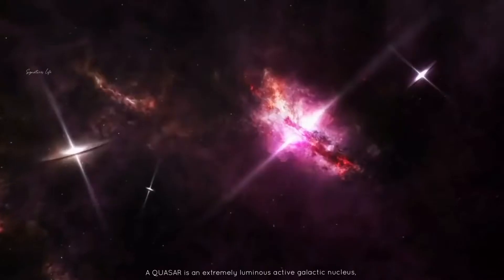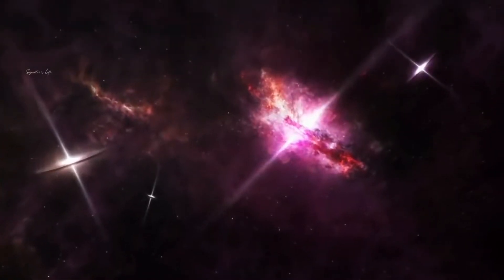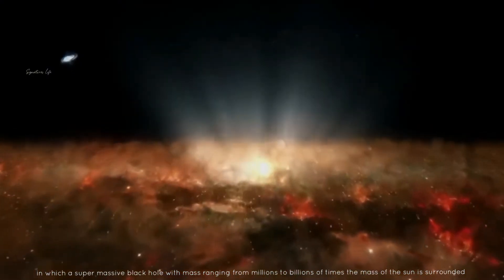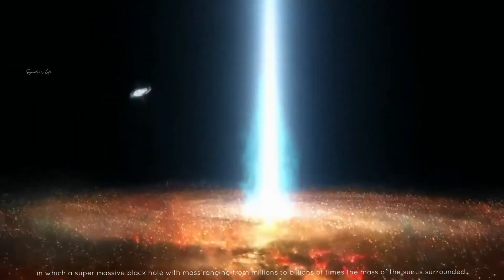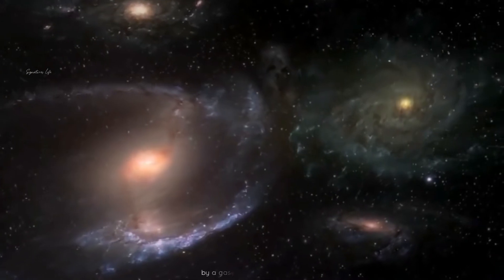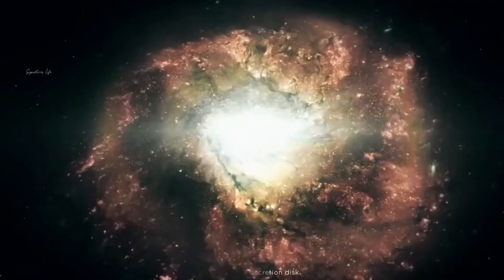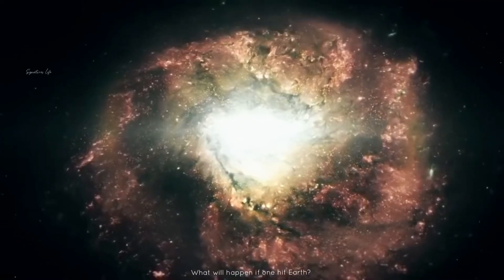A quasar is an extremely luminous active galactic nucleus in which a supermassive black hole with mass ranging from millions to billions of times the mass of the sun is surrounded by a gaseous accretion disk. What will happen if one hit Earth?